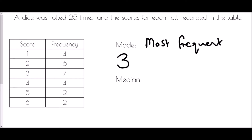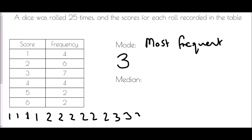What the table is saying is: we scored one four times — one, one, one, one; we scored two six times — two, two, two, two, two, two; then three seven times — three, three, three, and on and on. So to find the median we actually need to find where the middle value is.